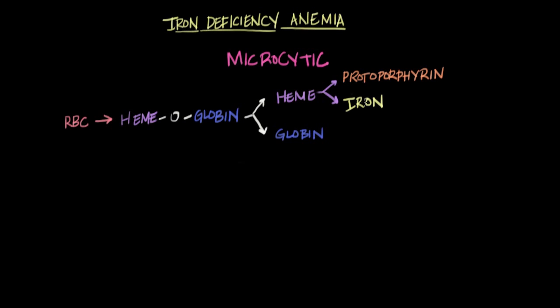So if you don't have iron, you certainly can't make heme. And without heme, you can't make hemoglobin. And anytime you have a problem with making hemoglobin, you end up with a microcytic anemia.